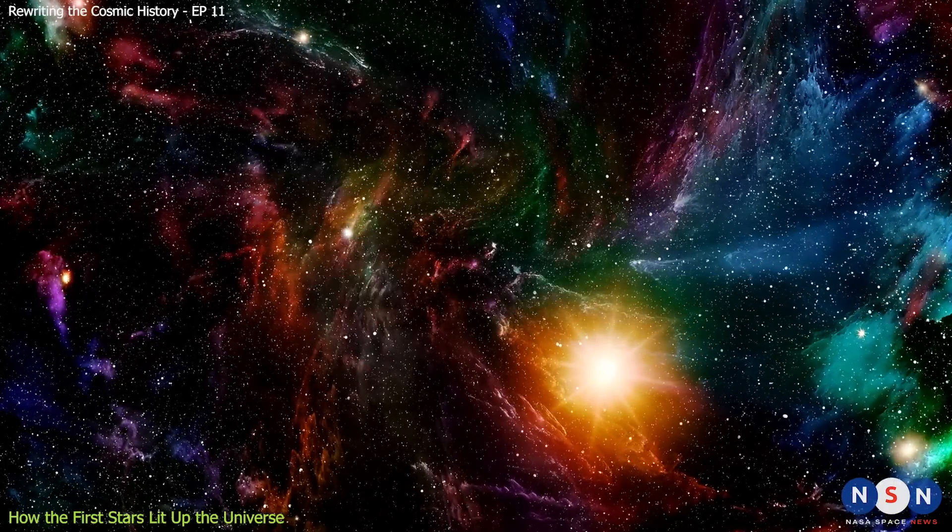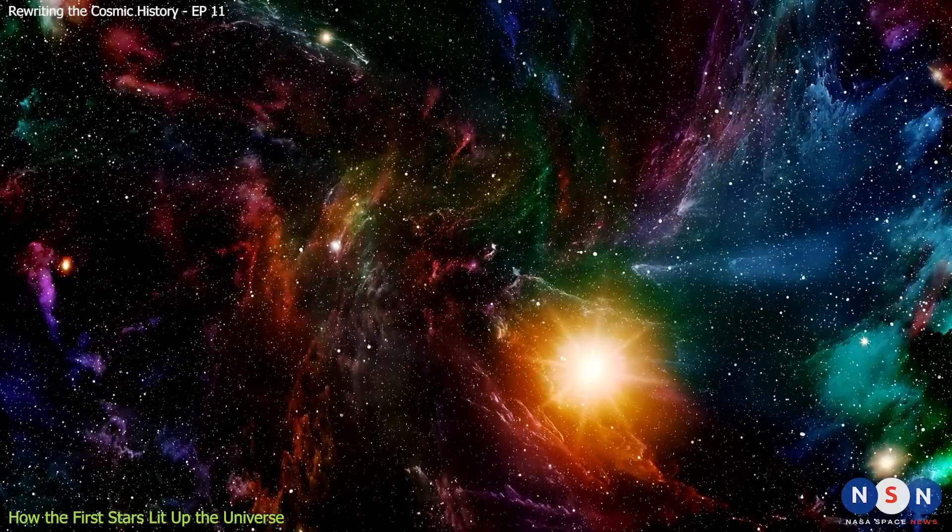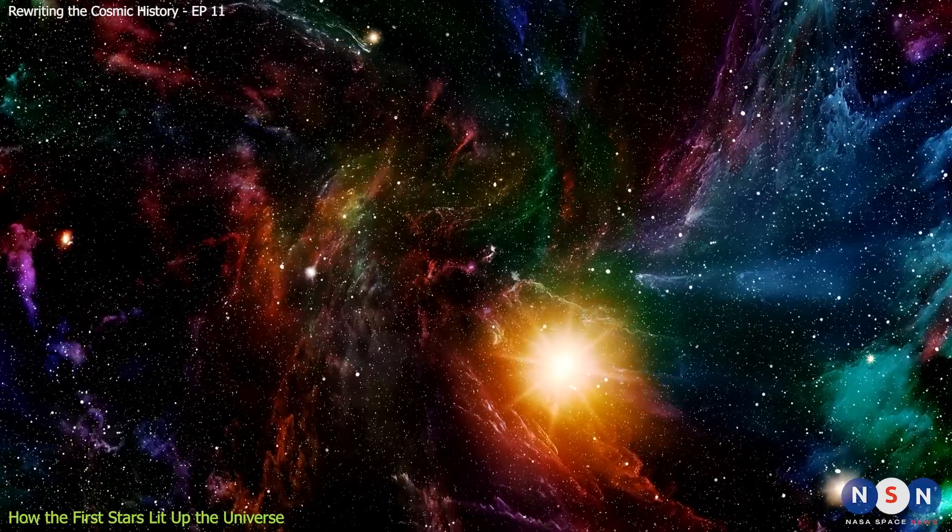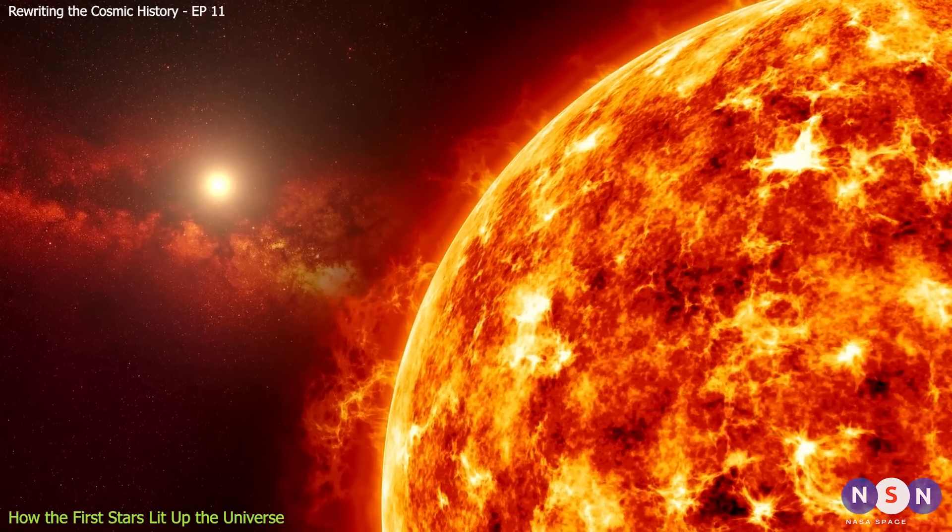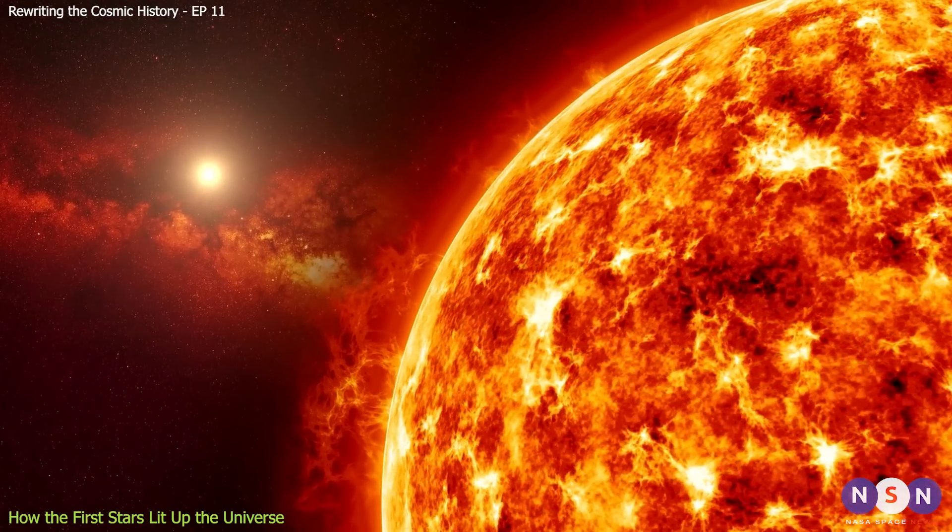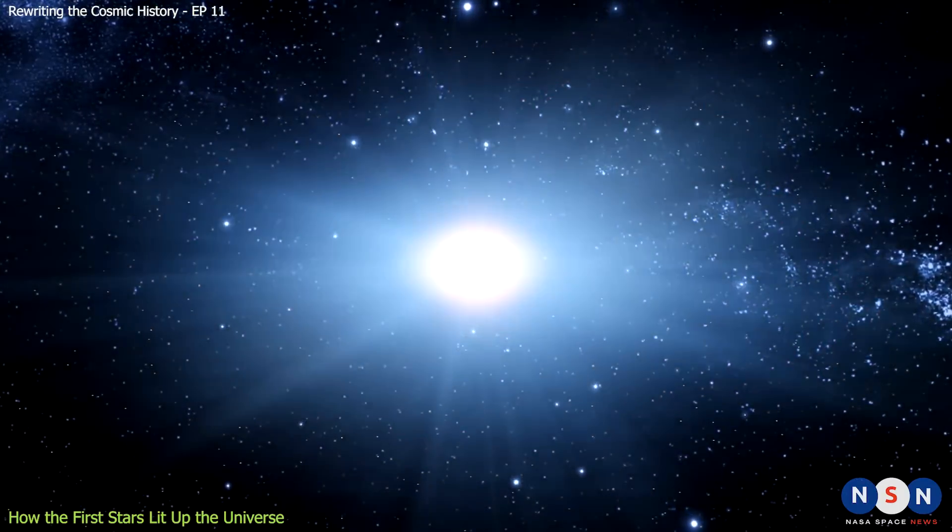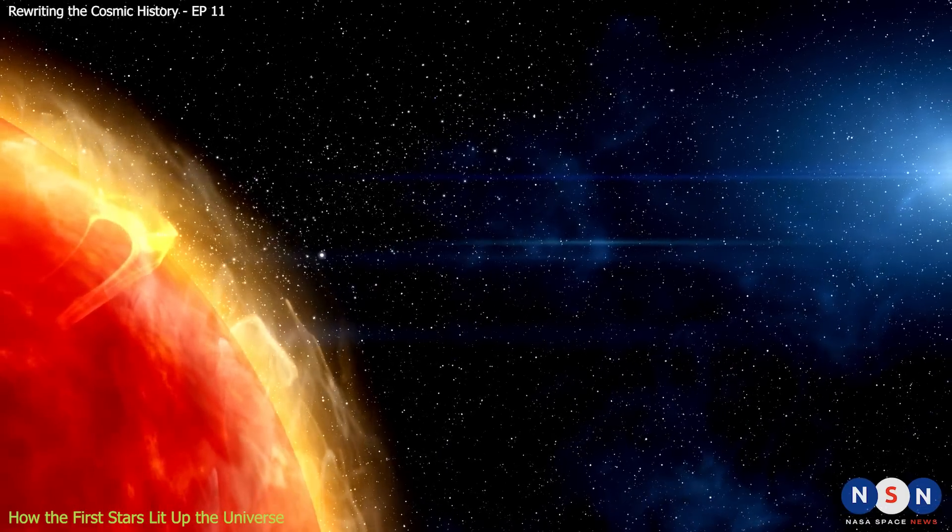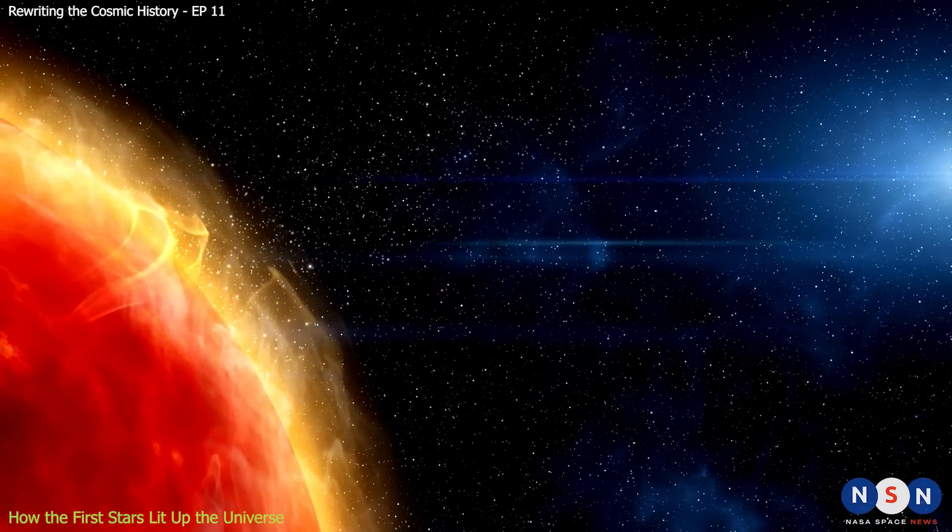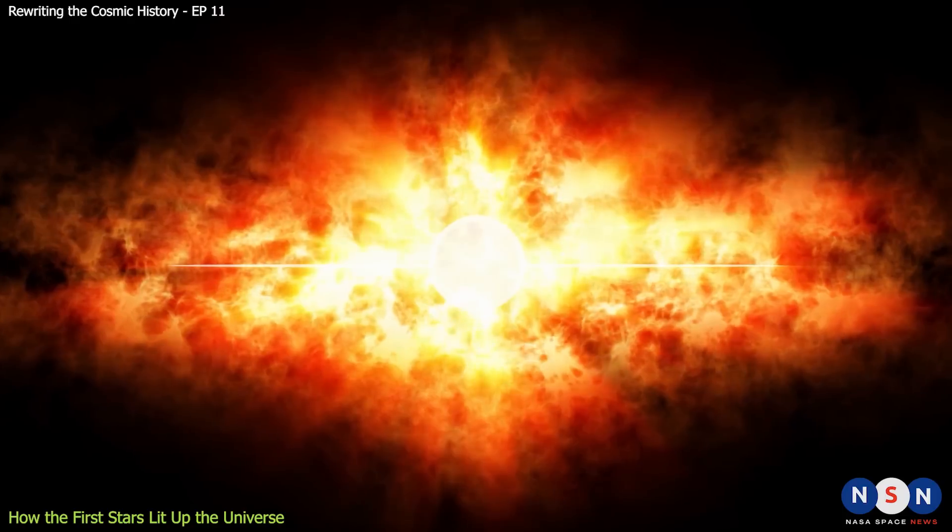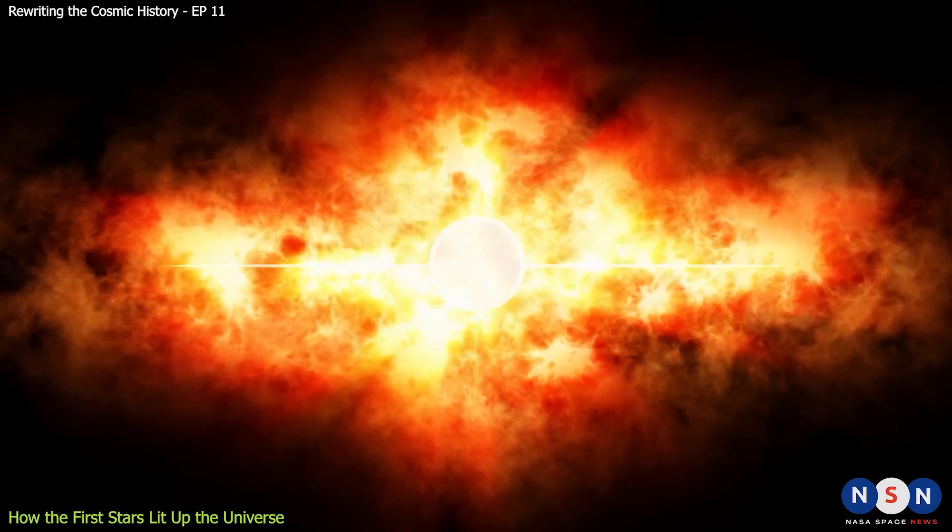But what were these stars like? How big were they? How bright were they? And how long did they live? You might be surprised by the answers. These stars were very different from the stars we see today. They had no metals in them, because metals are elements heavier than helium that are made by stars or explosions. They also had very big sizes up to 300 times bigger than our sun. These huge stars had very short lives, only a few million years at most, because they used up their fuel very quickly.